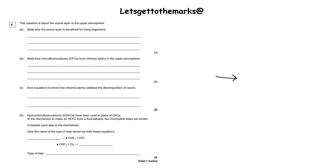Exam question: state why the ozone layer is beneficial to living organisms. The ozone layer protects us from harmful ultraviolet radiation, and it does this by absorbing UV radiation. That will get you full marks in your answer.